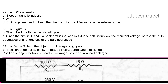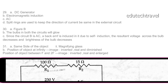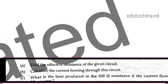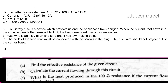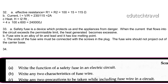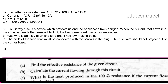Find the effective resistance of the given circuit. Effective resistance R = R1 + R2 = 100 + 15 = 115 ohm. Current I = V/R = 230/115 = 2 ampere. Heat produced in the 100 ohm resistor in 10 minutes: H = I²Rt = 4 × 100 × 600 = 240,000 joules.